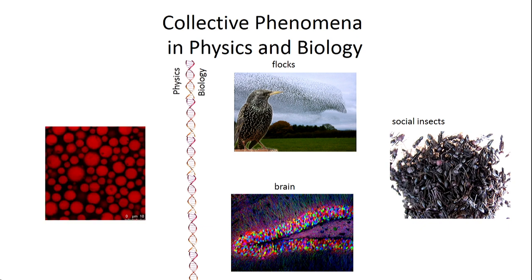One field in which we have some tools for describing large systems of similar particles is physics. We have some decent tools that were developed over the years. The question that arises is: can we take these tools, these phenomena that we know from physics, and try to use them to understand these collective biological groups? It's interesting how far we can get, and also interesting where we'll stop. What is the limit of this approach?